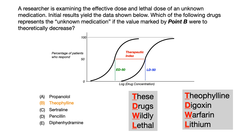So if we go back to our practice question, you could have theoretically not known anything about the therapeutic index and just looked at choices A, B, C, D, and E, and asked yourself which of these medications is different from the rest. That said, the easiest way to get a question like this correct is to know about the therapeutic index, to know where the ED50 and LD50 fall on these curves, and to know the four drugs with the narrow therapeutic index: theophylline, digoxin, warfarin, and lithium. These drugs are wildly lethal. They have narrow therapeutic indices, which means their use is reserved for patients that truly need them, and once those patients are on these medications, they're monitored very closely.